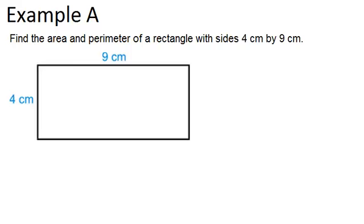In this video, we are going to practice finding the area and perimeter of rectangles. In example A, it says find the area and perimeter of a rectangle with sides 4 cm by 9 cm.